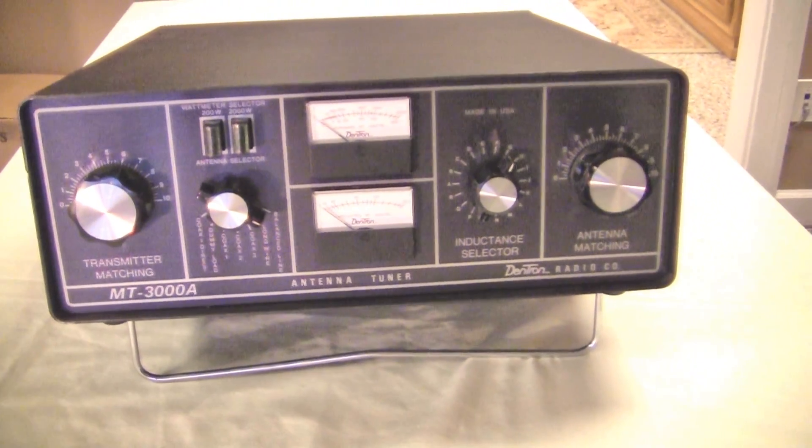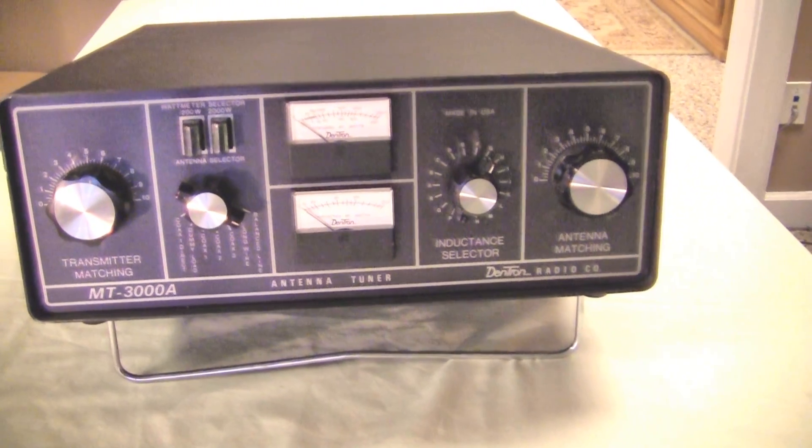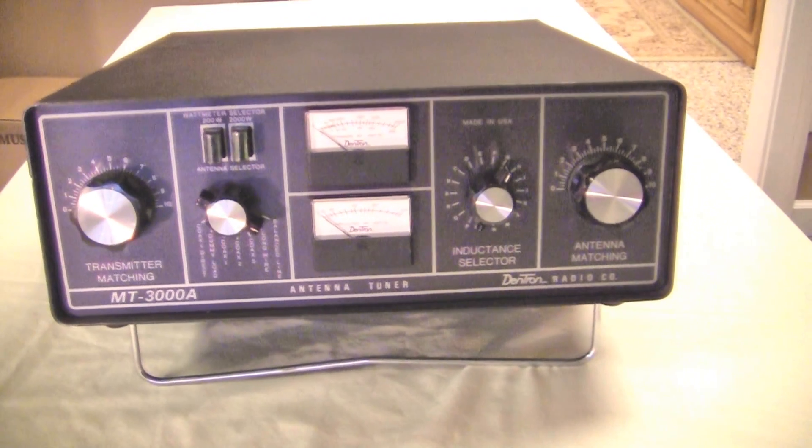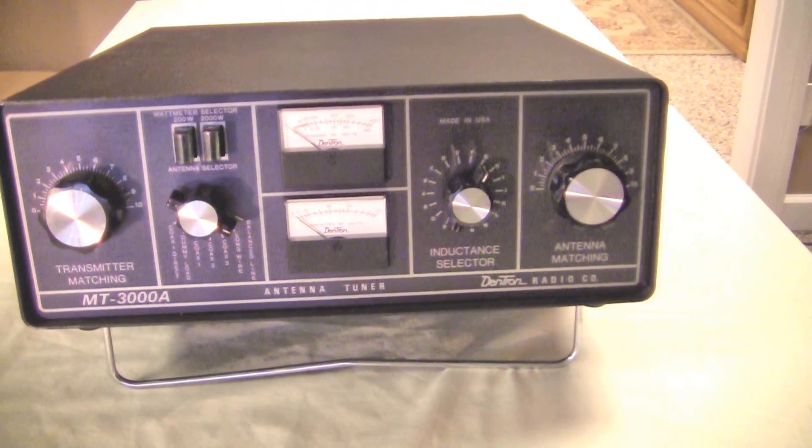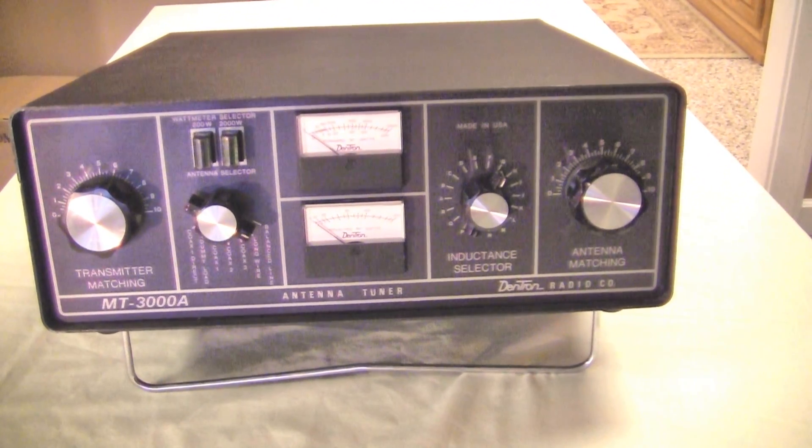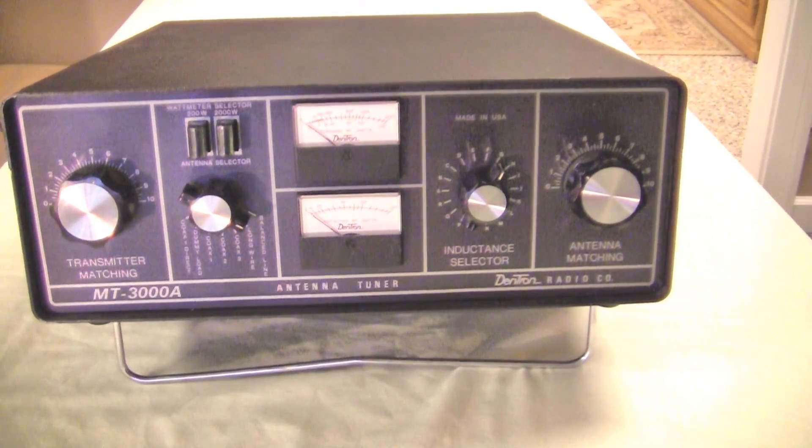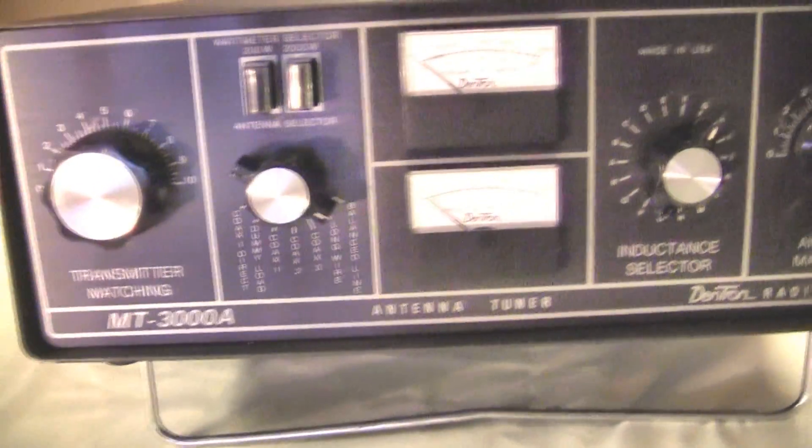Let's take a look at this Dentron MT-3000AL, the front panel controls. Like I said, this is a heavy-duty antenna tuner, made many years ago. Dentron's been out of business for many, many years. So let's take a look at what we have. First of all, the metering.